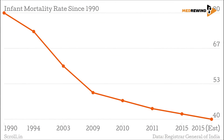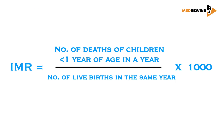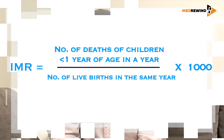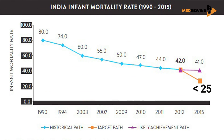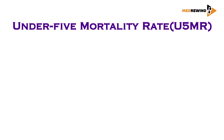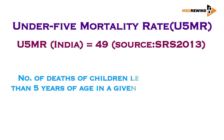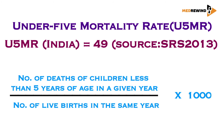Similarly, our Infant Mortality Rate has also come down to its historic low level of only 40 infant deaths per thousand live births. The target continues to be to bring it down below 25. A very important socioeconomic indicator is the Under-5 Mortality Rate, and again we have been able to bring that down to the latest level of 49 per thousand live births.